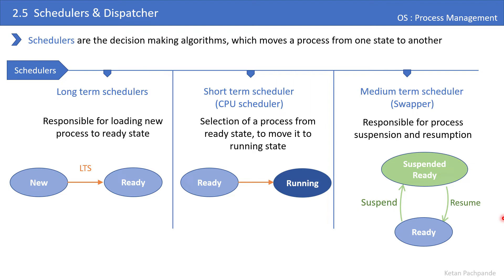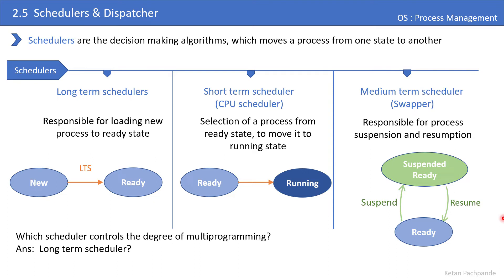Out of these three schedulers, which one controls the degree of multi-programming? Degree of multi-programming means how many processes can be in memory at one time. The long-term scheduler decides the transition from new to ready, and therefore it decides the degree of multi-programming — how many processes will be in the entire system is purely decided by the long-term scheduler.